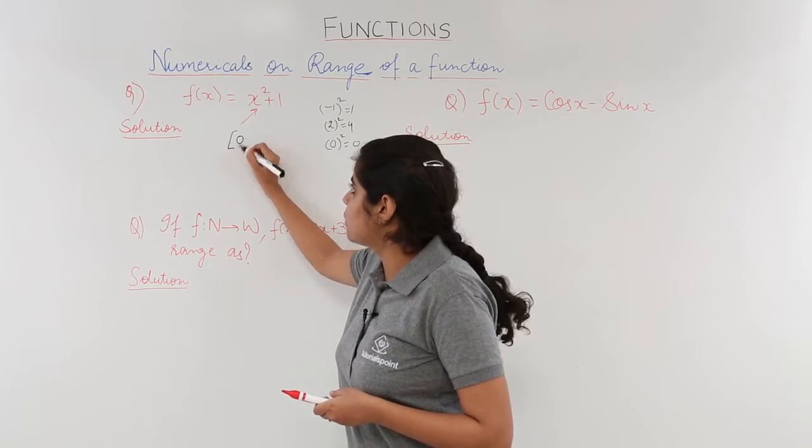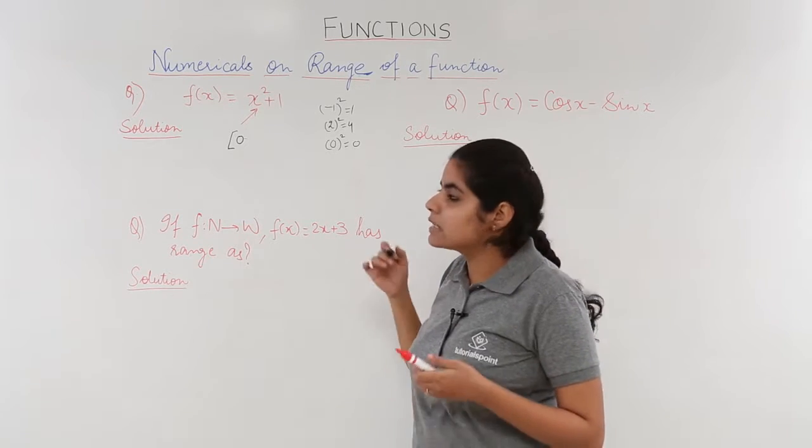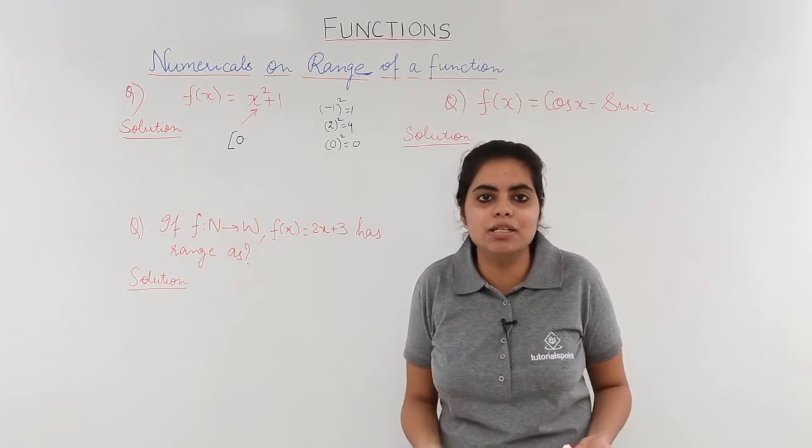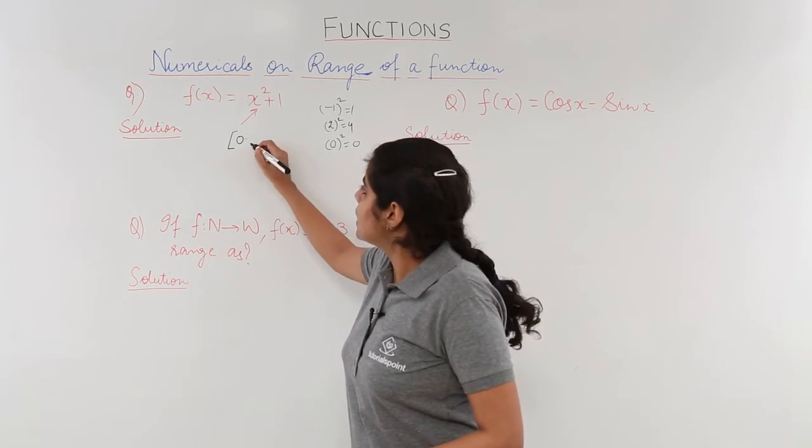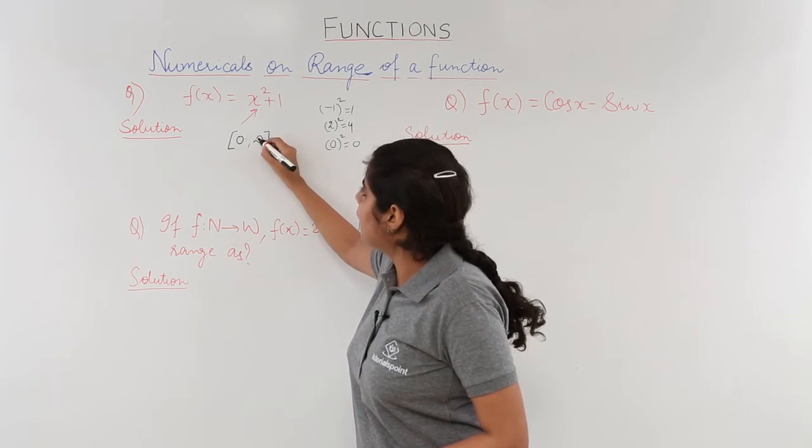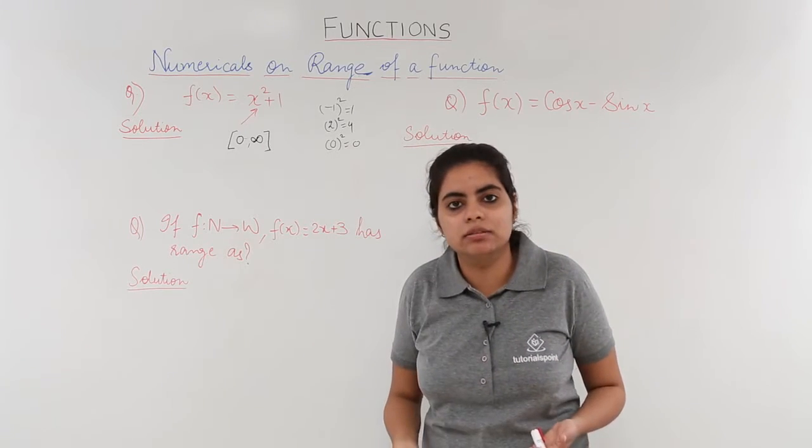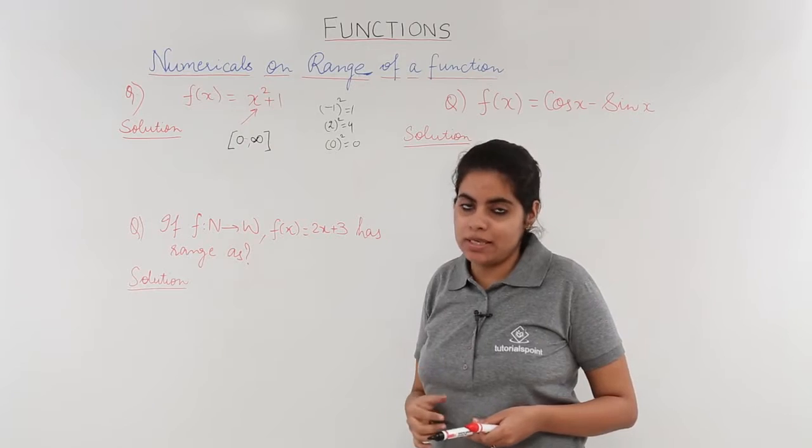So 0 is included, so I have a big bracket for it. And this 0 can continue till any number. Bigger numbers will have bigger squares, smaller numbers will have smaller squares. So this can continue till infinity. I can have the square of x square till infinity. But the answer should not be left only as per x square.